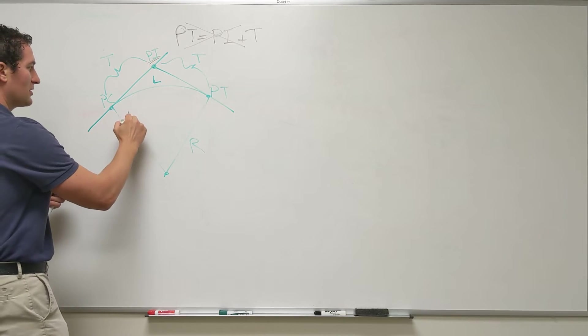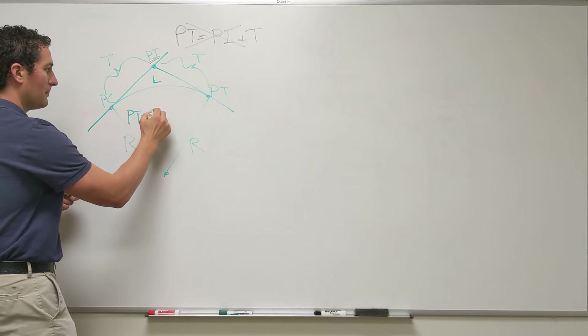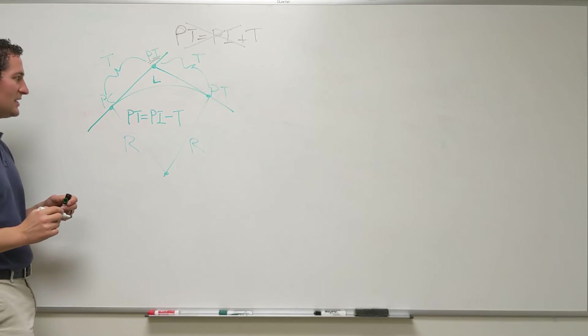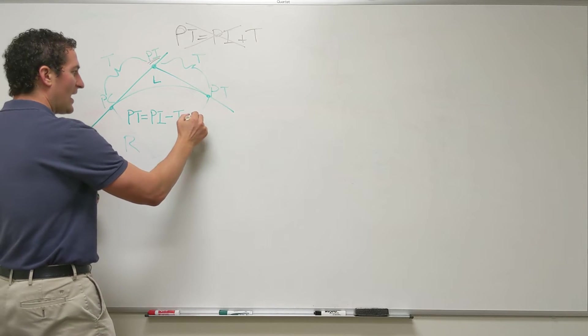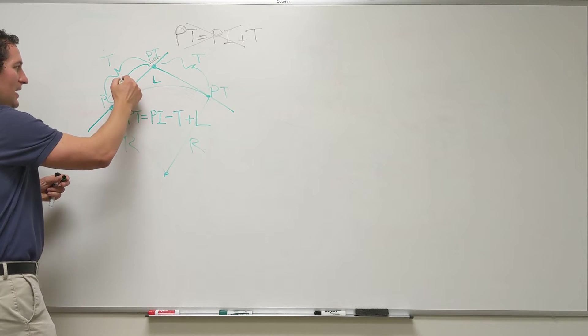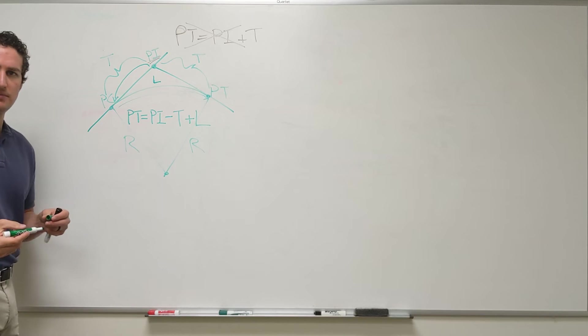So the correct equation for the station of the PT is: we're going to start from the PI, we're going to subtract the length of the tangent T, and then we're going to add the length of the curve. So we're going to go from the PI back to the PC and then along the curve to the PT.